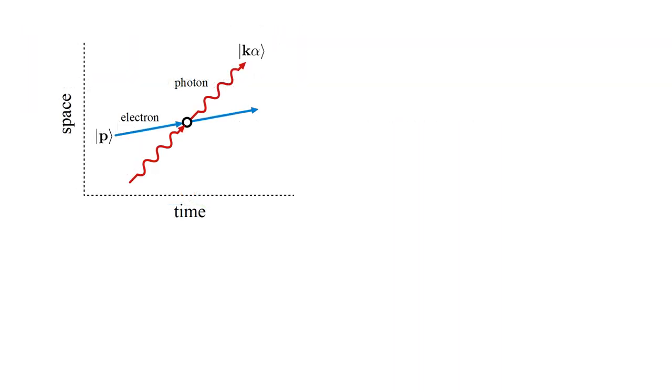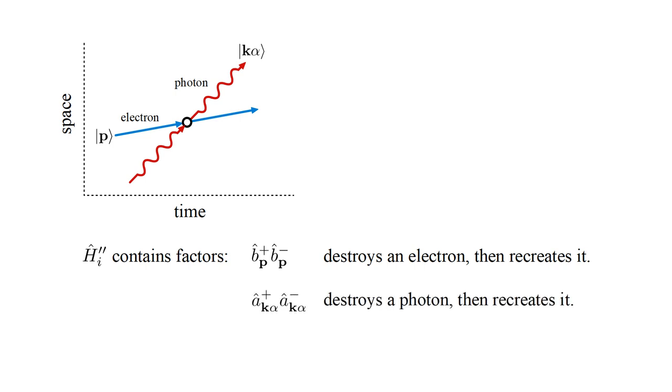Consider the scattering process where the same electron and photon are destroyed and created. H-hat-I double-prime contains operators that destroy any electron and create any other electron. A special case is the destruction and recreation of the same electron. Likewise, the destruction and recreation of the same photon.